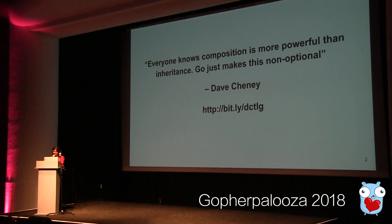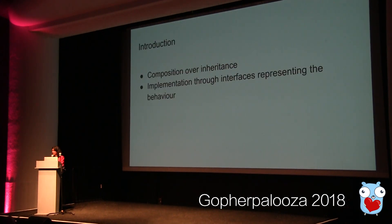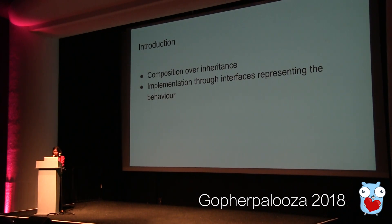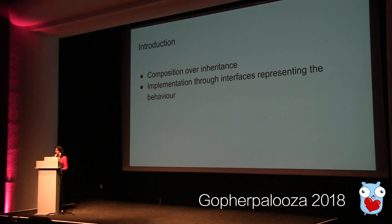We'll jump in to understand why. Composition over inheritance, or the composite reuse principle, is an object-oriented programming principle that says classes should achieve polymorphic behavior and code reuse by composition rather than inheritance from a parent class. Implementation of composition over inheritance typically begins with the creation of various interfaces representing the behaviors that the system must model.